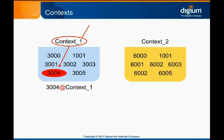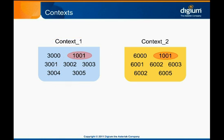Usually the context is predefined in the channel driver's configuration for the phone or trunk. It's important to keep track of which context you're dialing in, because it's common for the same extension to exist in more than one context. If Asterisk behaves unexpectedly when you dial a given extension, you may be connecting to the right extension in the wrong context.